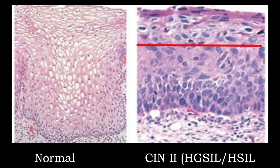This photograph again shows normal appearance of the epithelium for comparison with CIN2, that is cervical intraepithelial neoplasia grade 2, now called HSIL or high-grade squamous intraepithelial lesion. The lower two-thirds of the thickness of the epithelium is involved and shows disturbed architecture when compared with the normal photograph, with the CIN2 area marked with a red line.